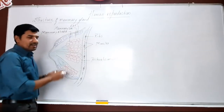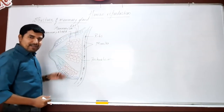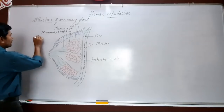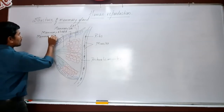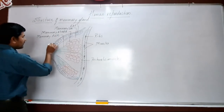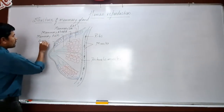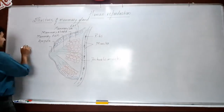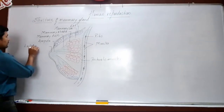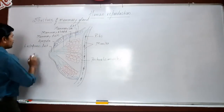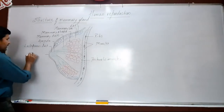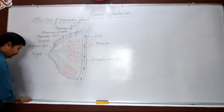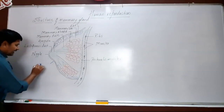The singular form is alveolus; in plural form we call them alveoli. Then here we have mammary ducts, and the ampulla — a larger part — then the lactiferous duct. This part we call the nipple, and surrounding the nipple we have a dark pigmented skin called the areola.